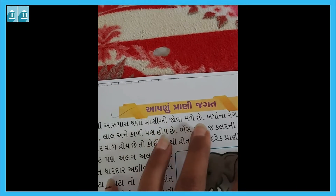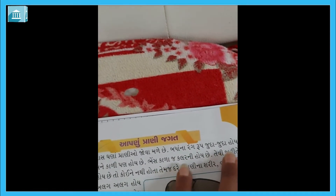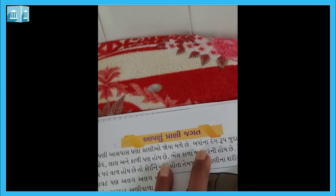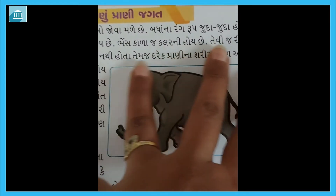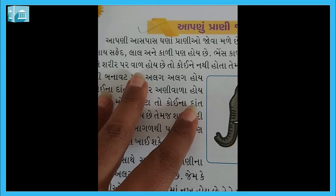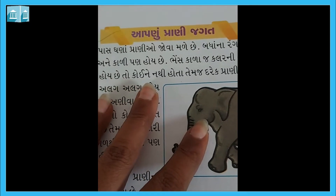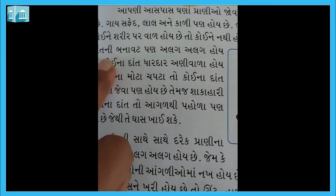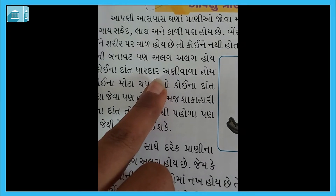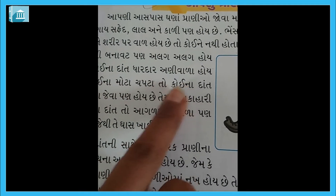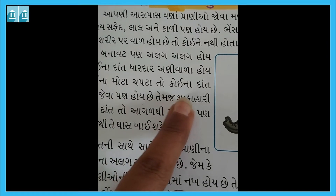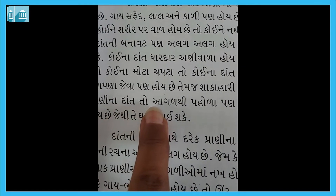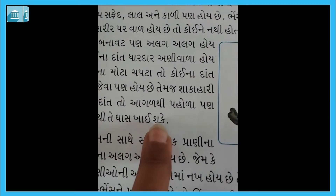આપણી આસપાસ ઘણા પ્રાણીઓ જોવા મળે છે. બધાના રૂપ-રંગ જુદા જુદા હોય છે - ગાય સફેદ હોય છે, લાલ હોય છે, નકાડી પણ હોય છે. તેવી જ રીતે કોઈ પ્રાણીના શરીર પર વાળ હોય છે, તો કોઈ પ્રાણીના શરીર પર વાળ નથી હોતા. દરેક પ્રાણીના દાંતની બનાવટ અલગ-અલગ હોય છે - કોઈના દાંત ધારદાર અણીવાળા, તો કોઈના દાંત ચપટા.